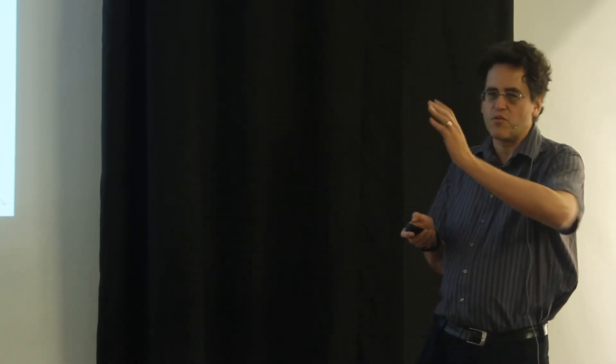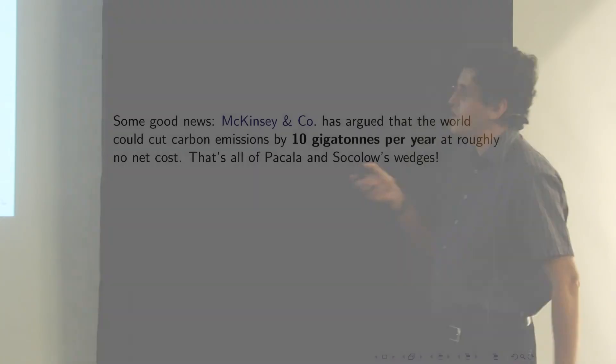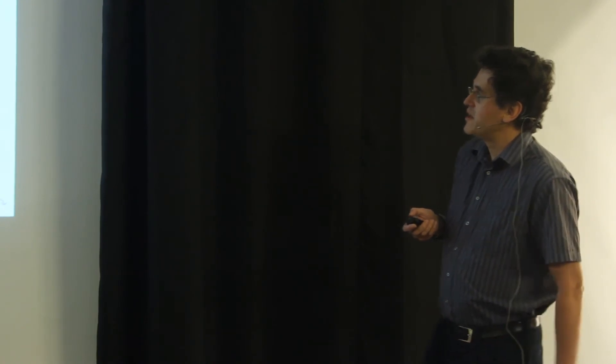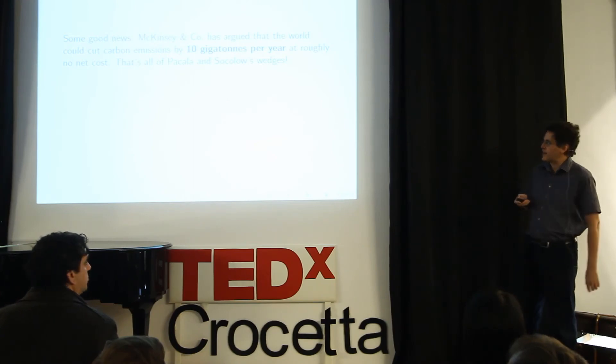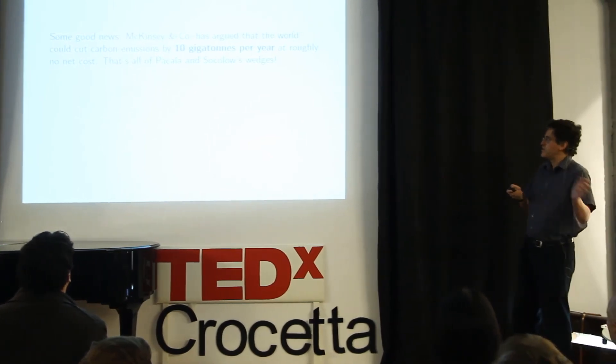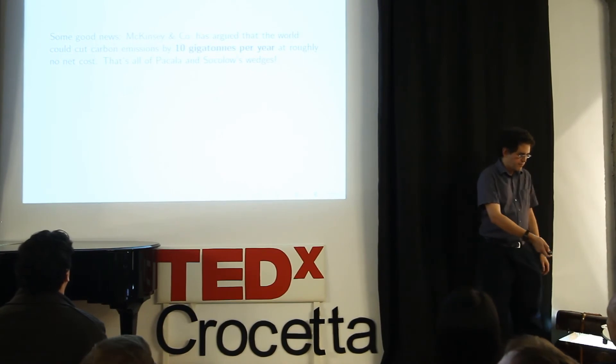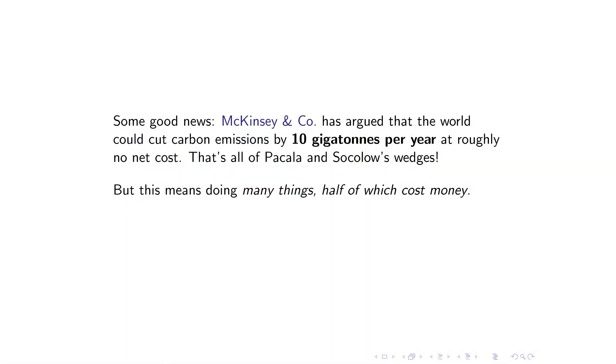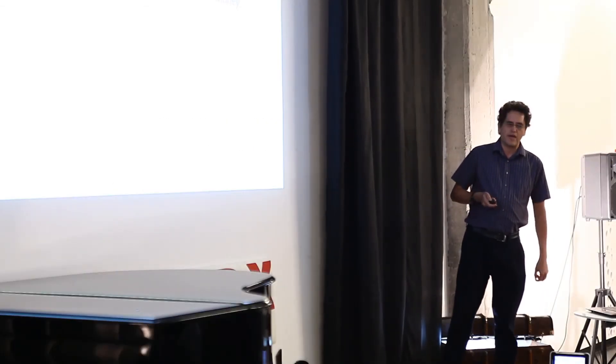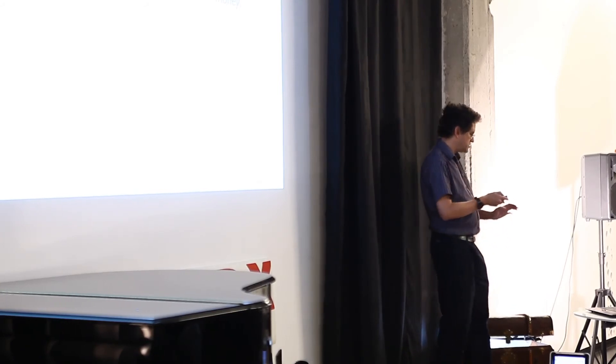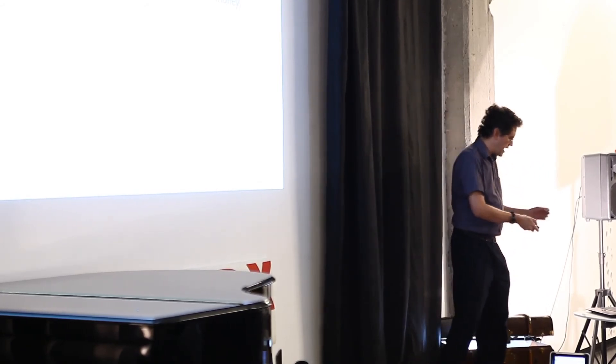And remember, seven is just to keep the problem getting worse at the same rate. Some really good news is that the consulting company, McKinsey and Company, has argued that the world could cut carbon emissions by 10 billion tons per year at roughly no net cost by balancing measures that are increased efficiency that actually save money with efficiency measures that cost money. But, of course, the problem is that just because you do something that saves you money doesn't mean that you're going to do the other thing that costs you money. So we have to figure out how to do a lot of things. They break it down into lots of smaller pieces, but half of them cost money.